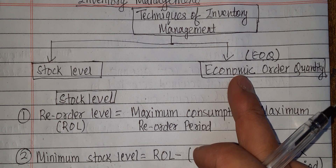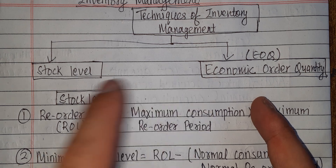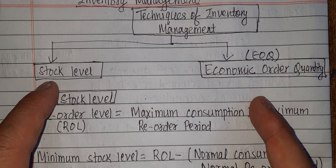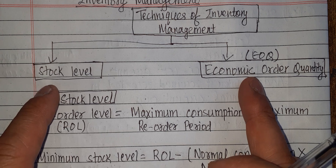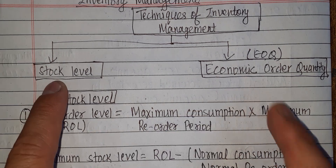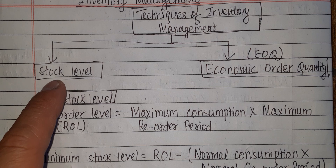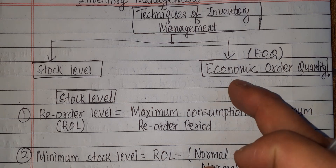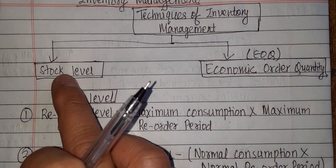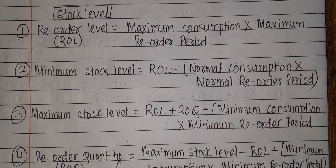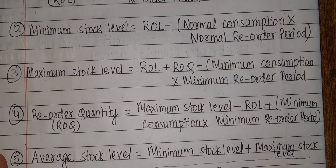If you think about the number of questions on economic order quantity or stock level, it is very short — no more than one mark. It is important to consider the number of questions. If you think about the economic order quantity, then you should start with the stock level.